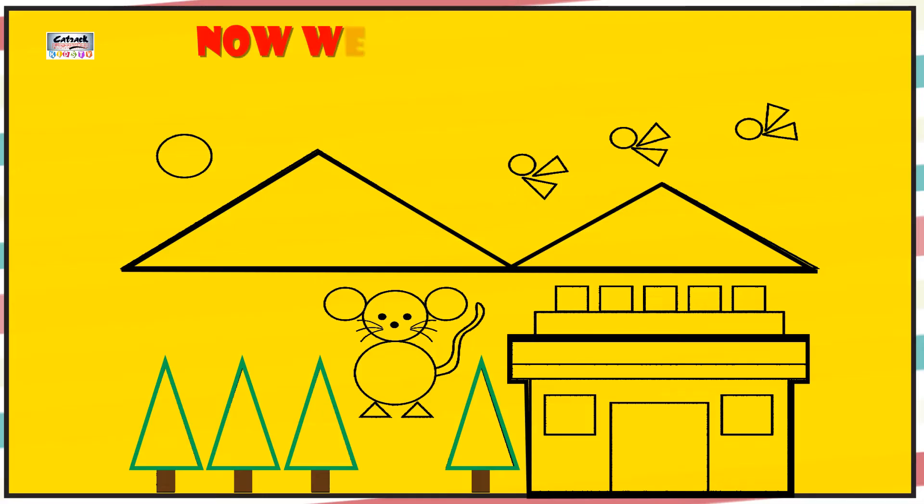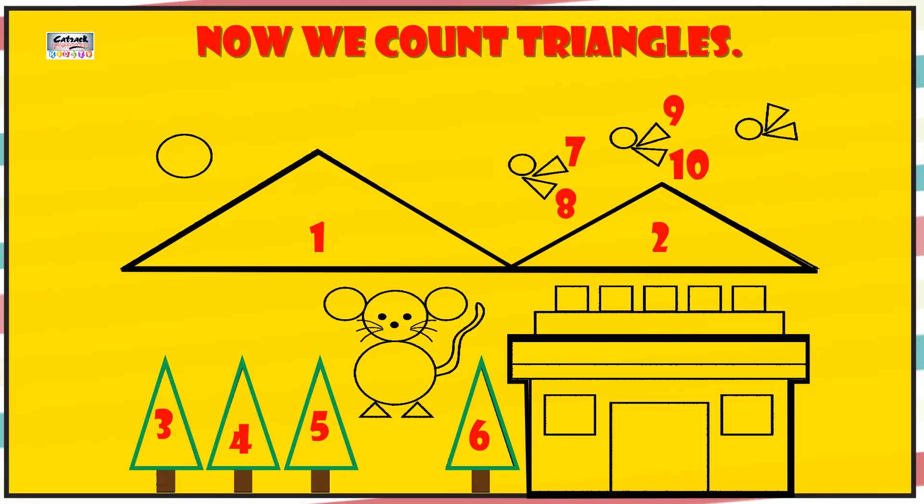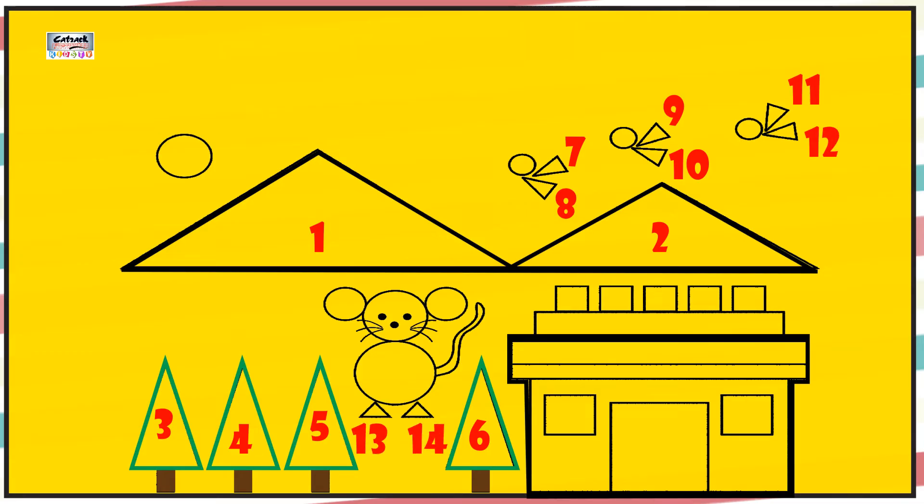Now we count triangles. 1, 2, 3, 4, 5, 6, 7, 8, 9, 10, 11, 12, 13, 14. So we have 14 triangles.